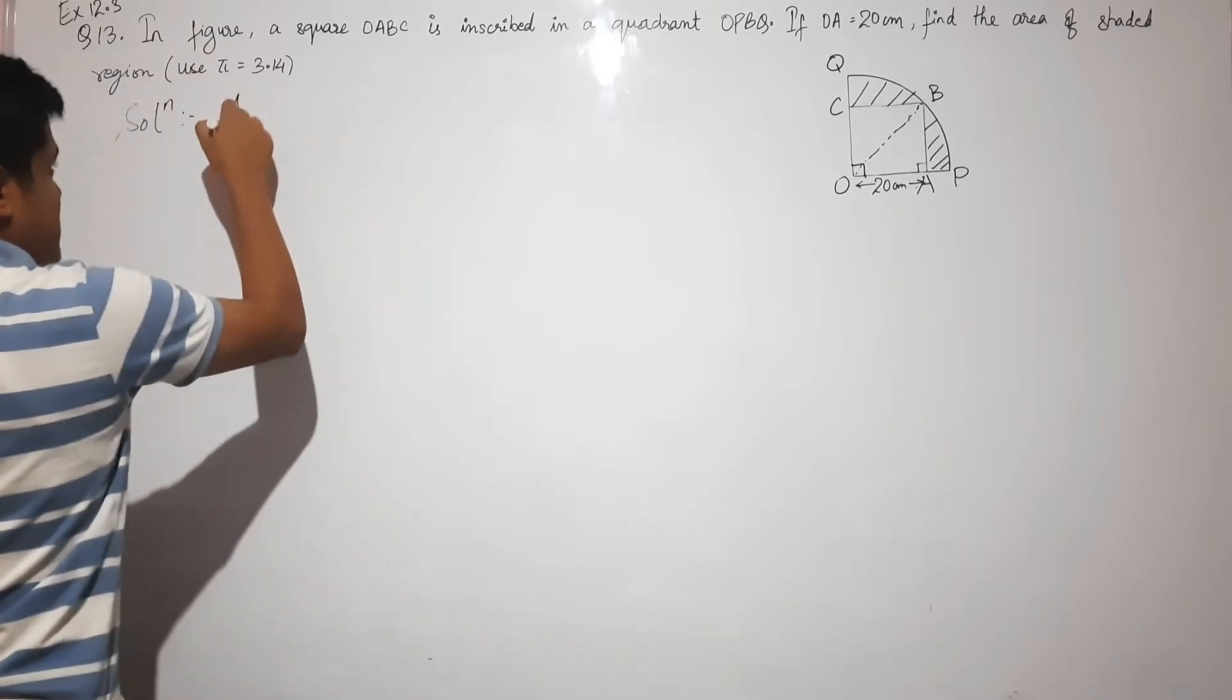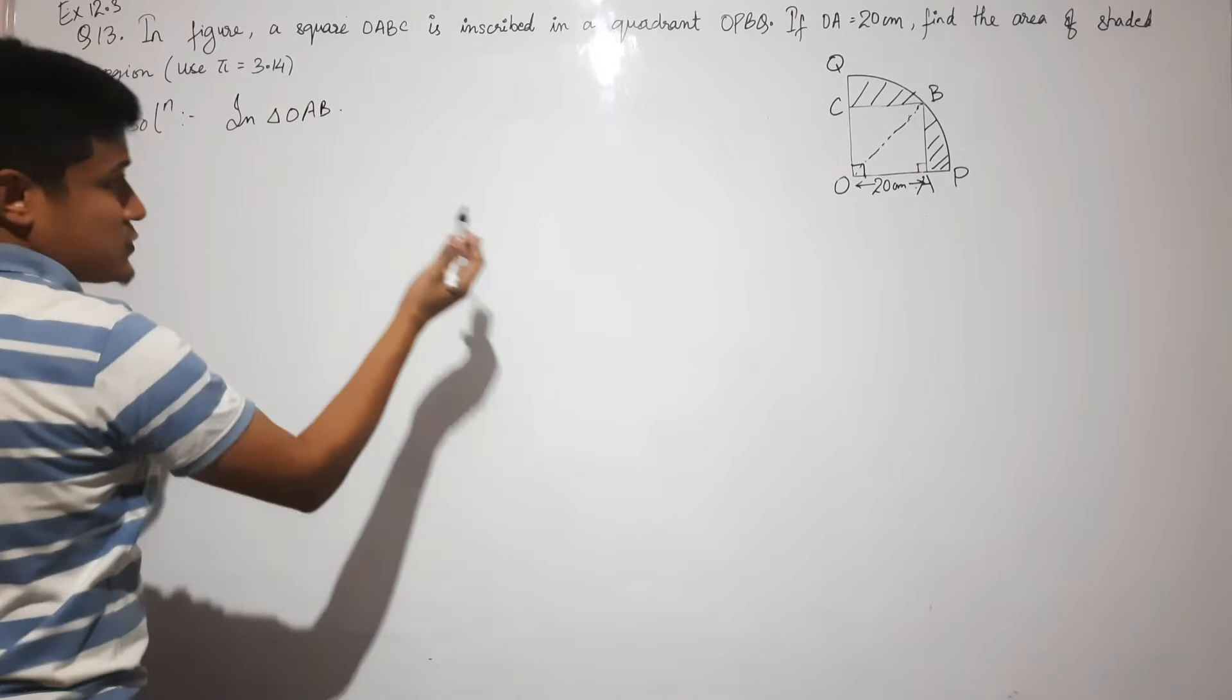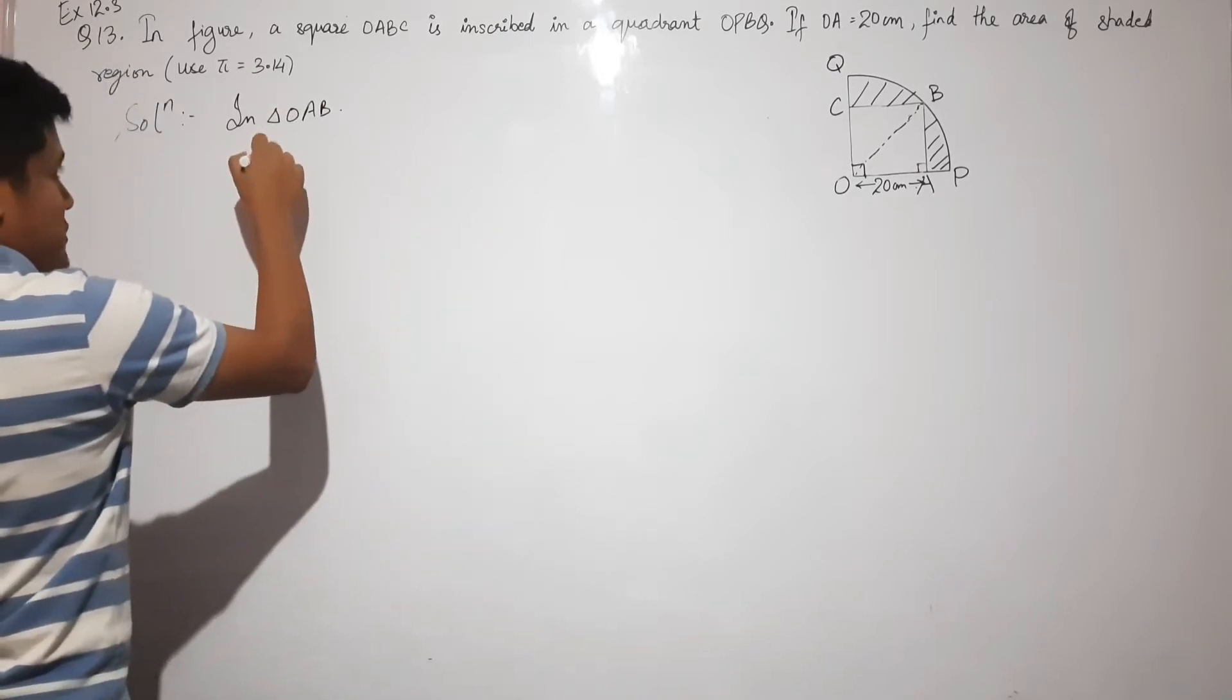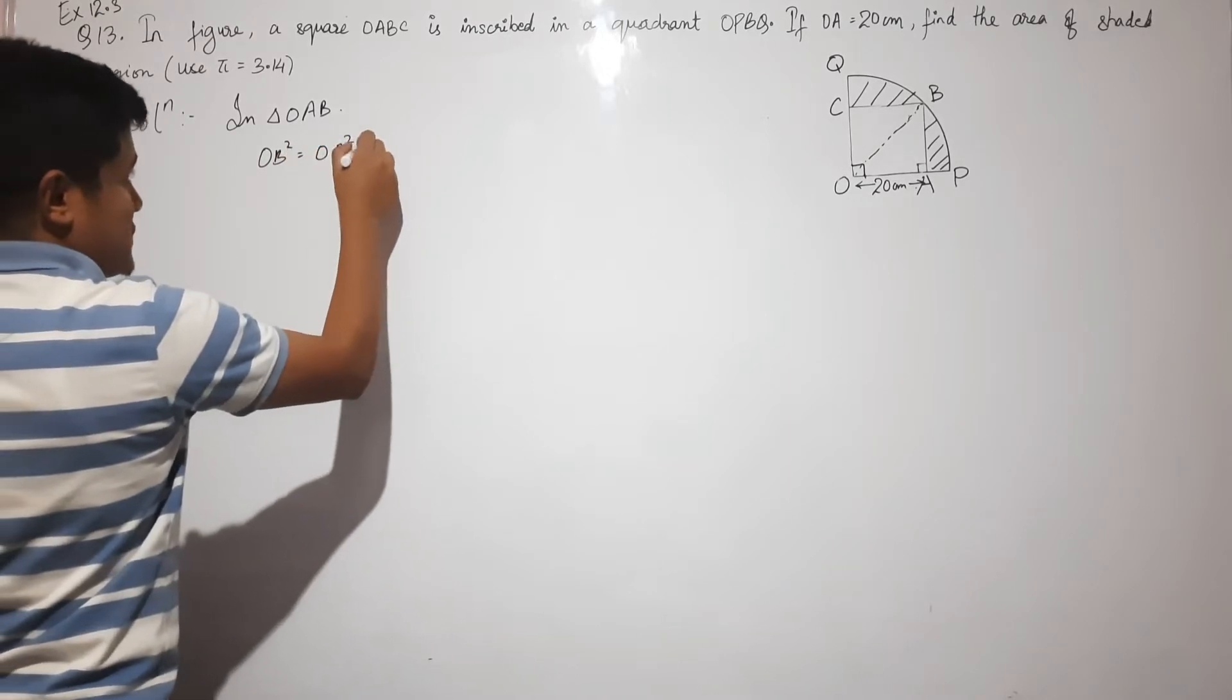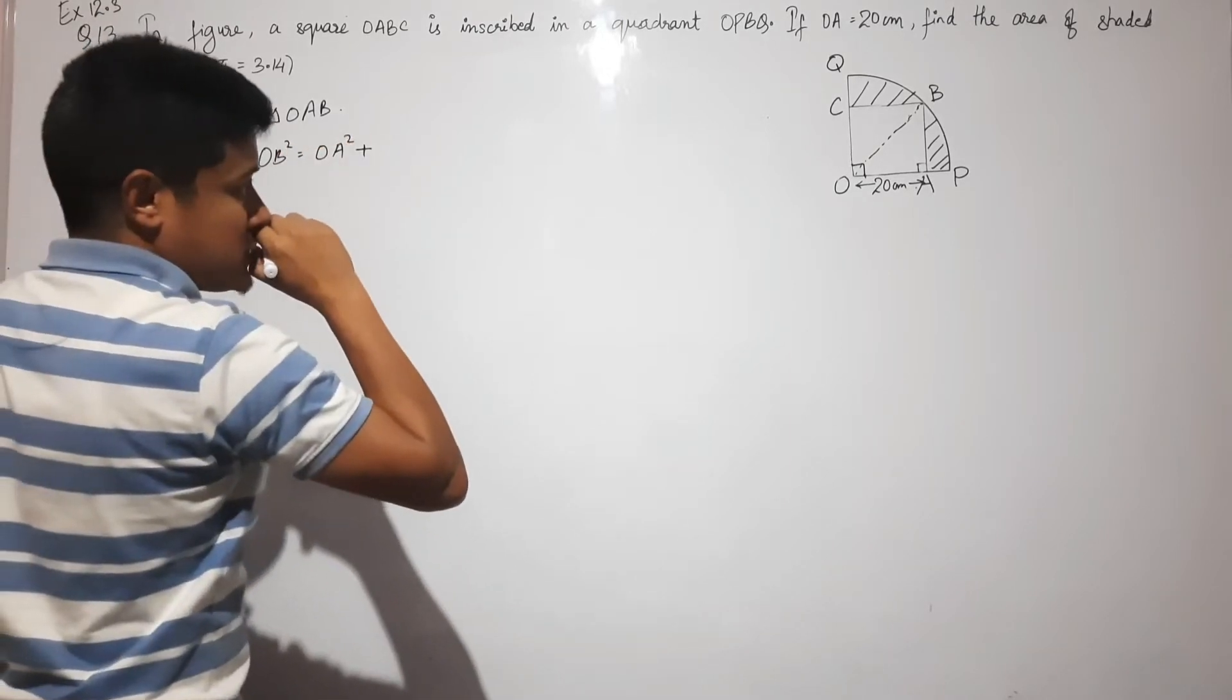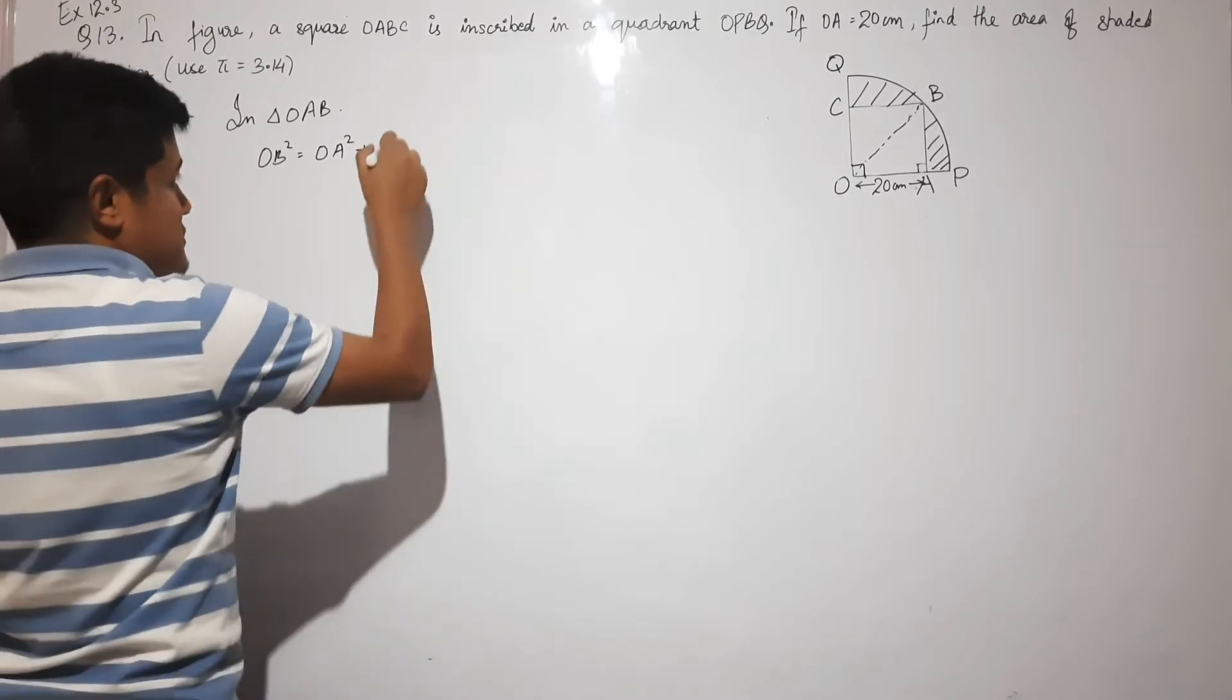Okay, in triangle OAB: OB² (or hypotenuse squared) equals OA² plus AB².